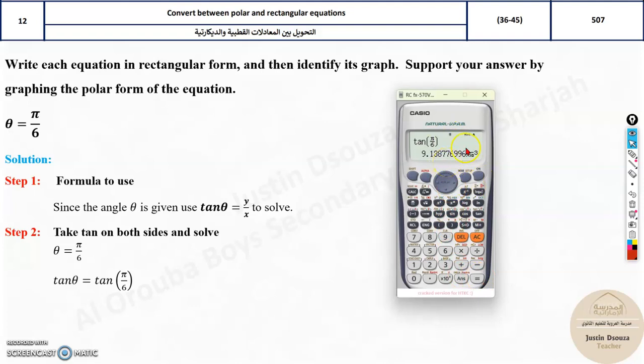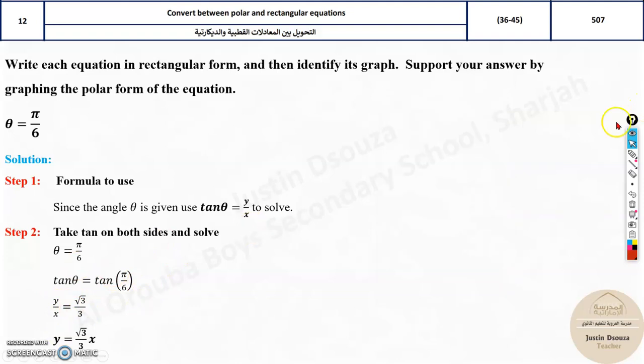If it's in degree mode and you put pi, you won't get the correct answer. You need to change it to radians. When you're solving such problems, you will get y by x equals root 3 by 3. You know that rectangular equations are always written as y equals some coefficient x, so take x to the other side. You will get root 3 by 3 x.